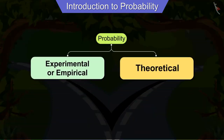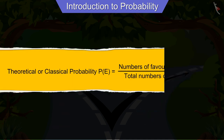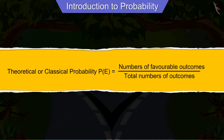Due to which the experimental probability cannot be used here. In such situations we take the help of theoretical probability, which is also known as classical probability. We use this formula to find the value in numerical form.